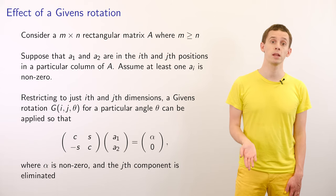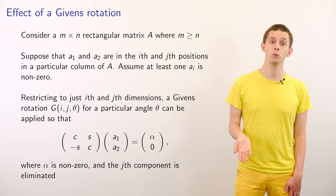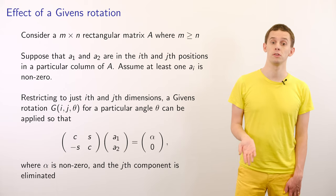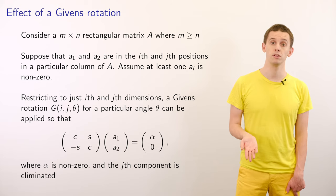Now let's consider an m by n rectangular matrix A, where m is greater than or equal to n. Suppose that a_1 and a_2 are in the i-th and j-th positions in a particular column of A, and assume that at least one of these is non-zero.